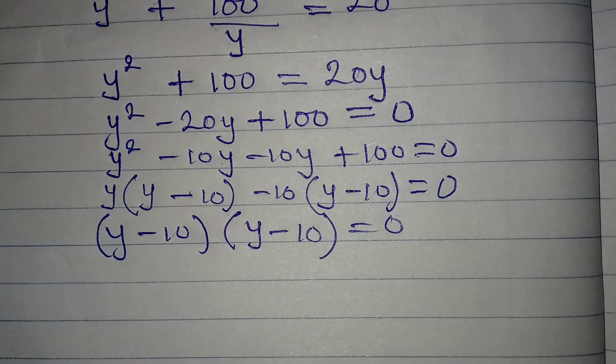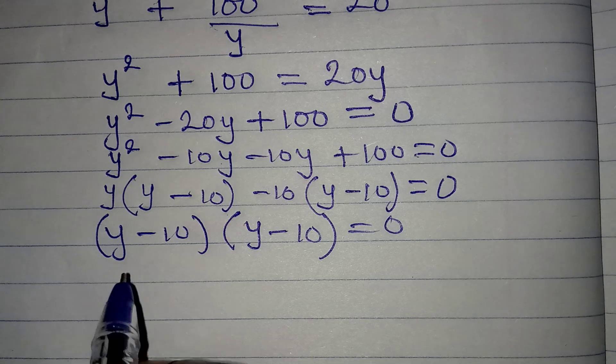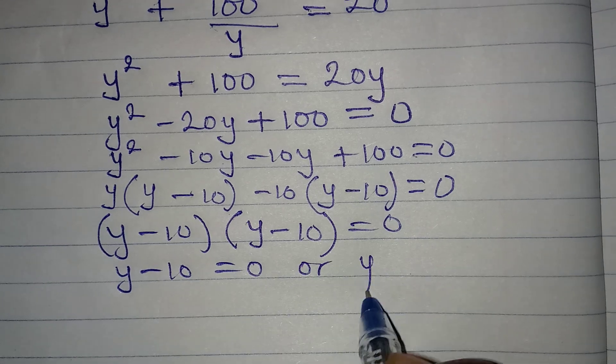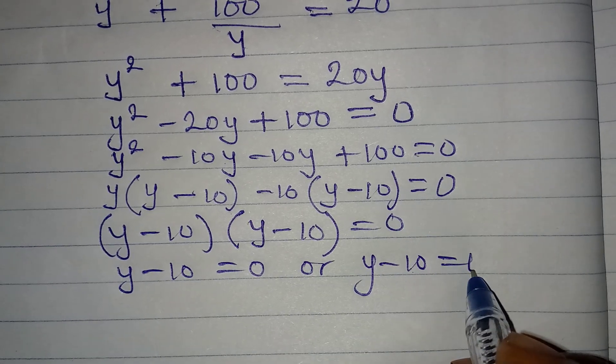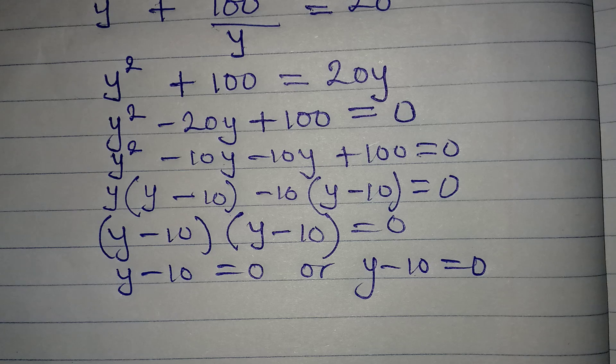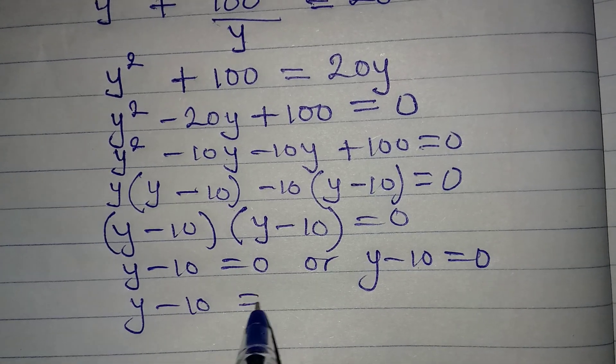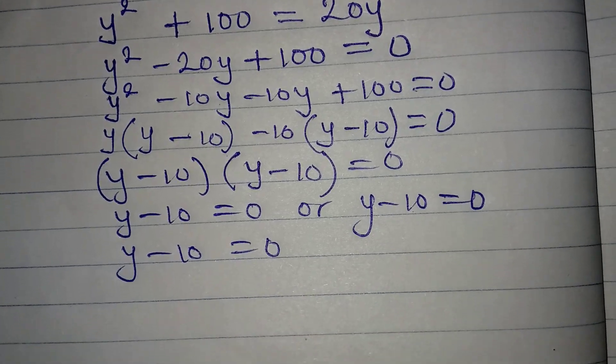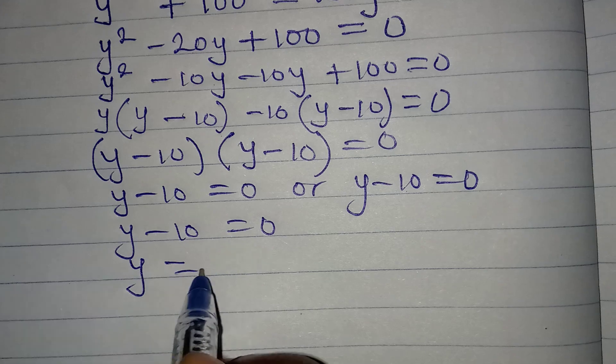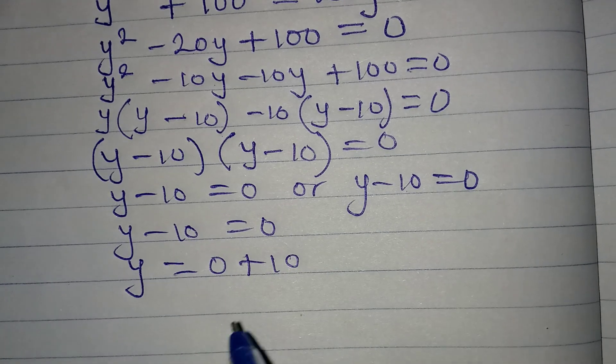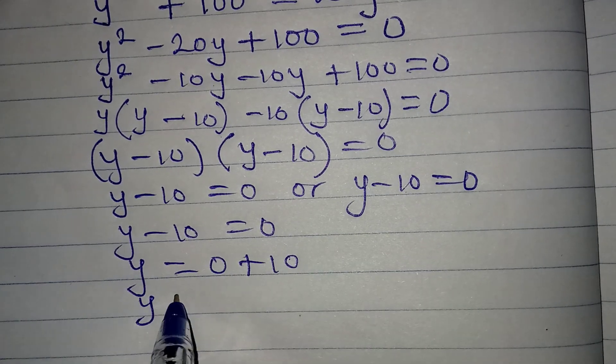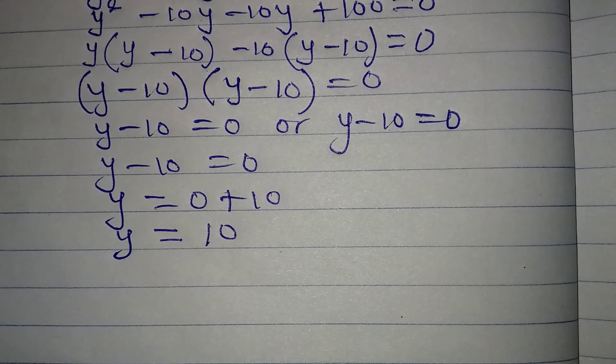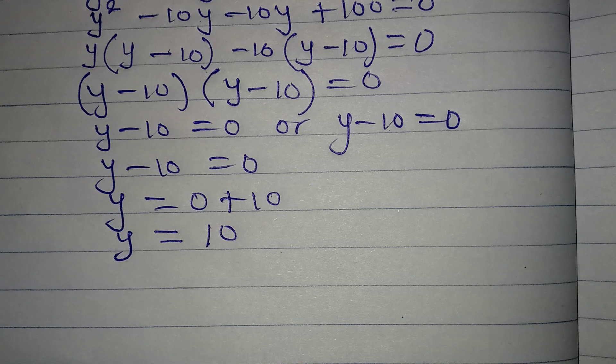So let's apply zero product rule. From here, y minus 10 is equal to 0 or y minus 10 is equal to 0. So this means that y minus 10 is equal to 0 on both sides, and from here, what do we do? We understand that y is equal to 0 plus 10, and then our y is equal to 10. But the question is, were we looking for the value of y? Nope, we're not looking for y.